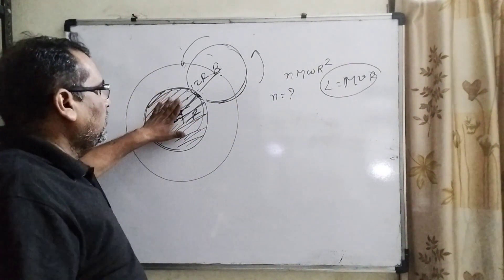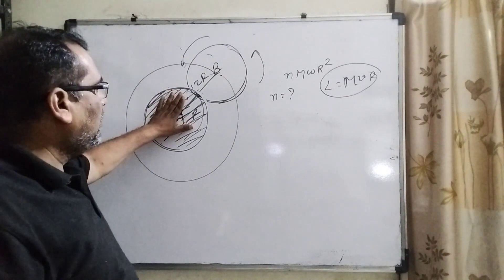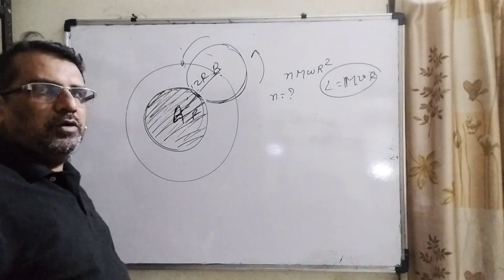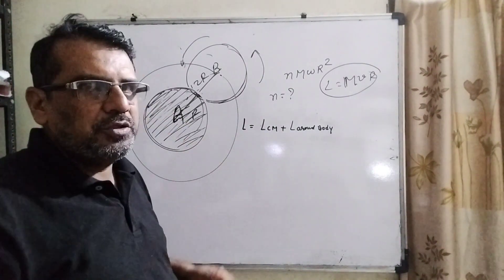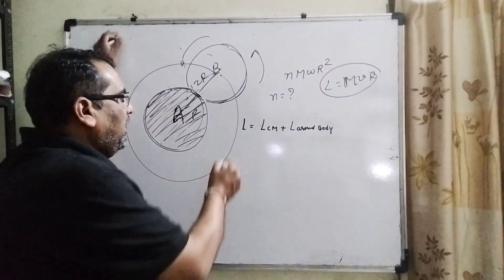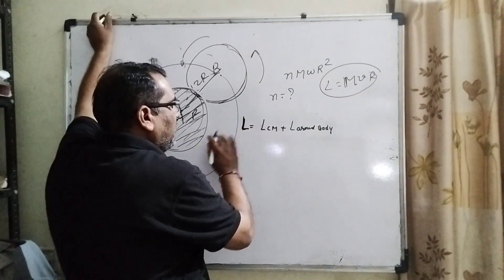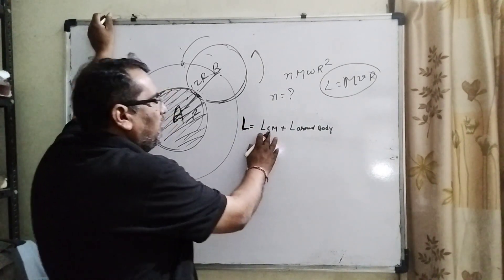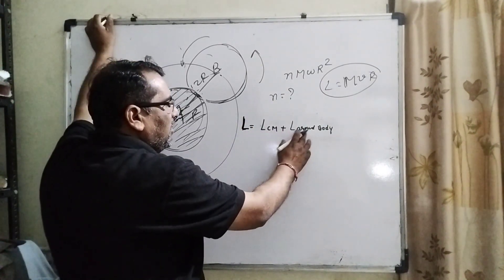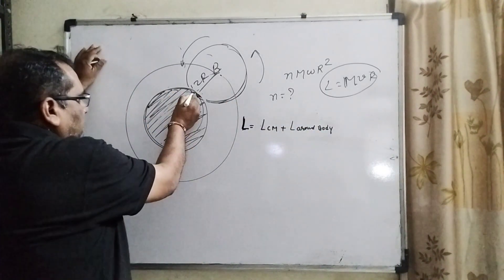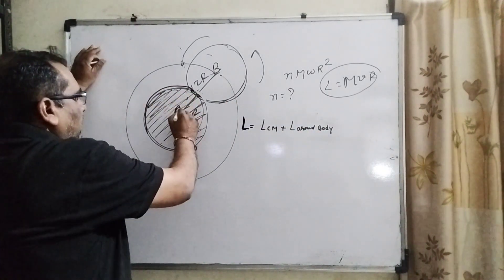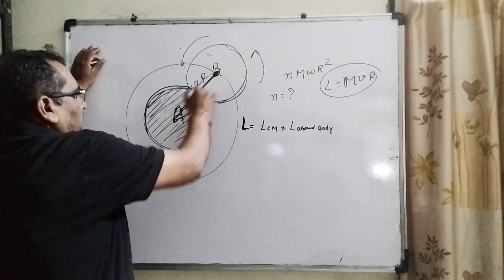Here the whole concept is based on the laws of conservation of angular momentum. So you understand actually what the question says. Here L, angular momentum of the whole system, equals angular momentum at the center of mass and angular momentum around the body at the circumference. This is the total A to B distance.